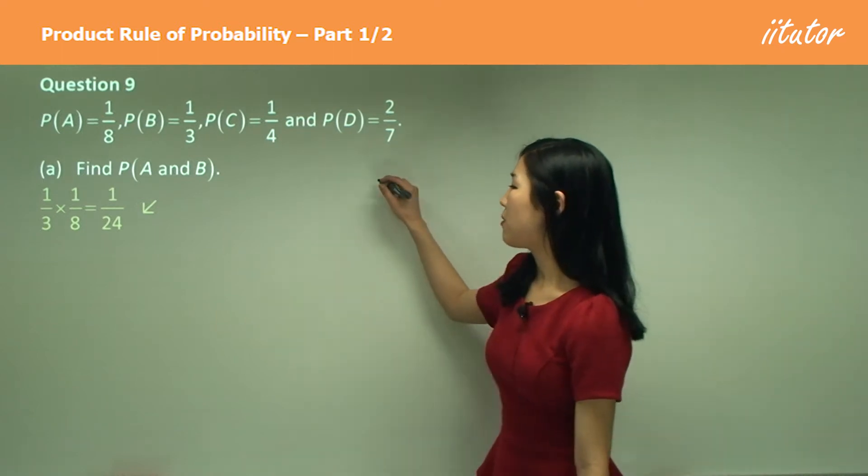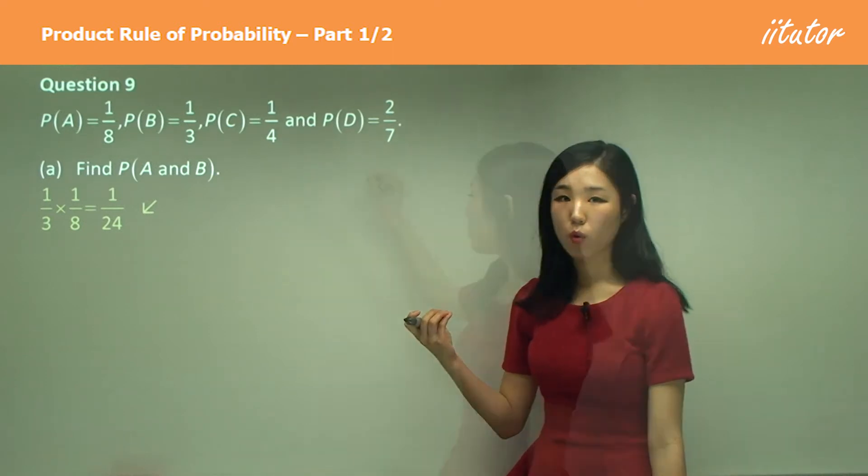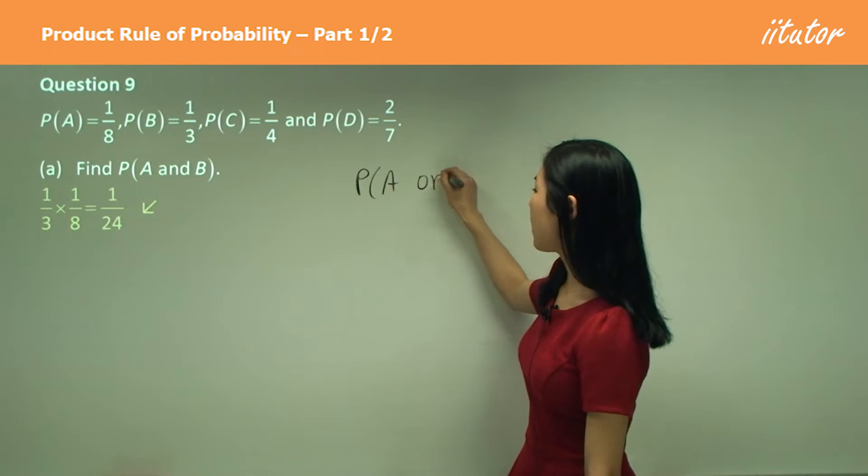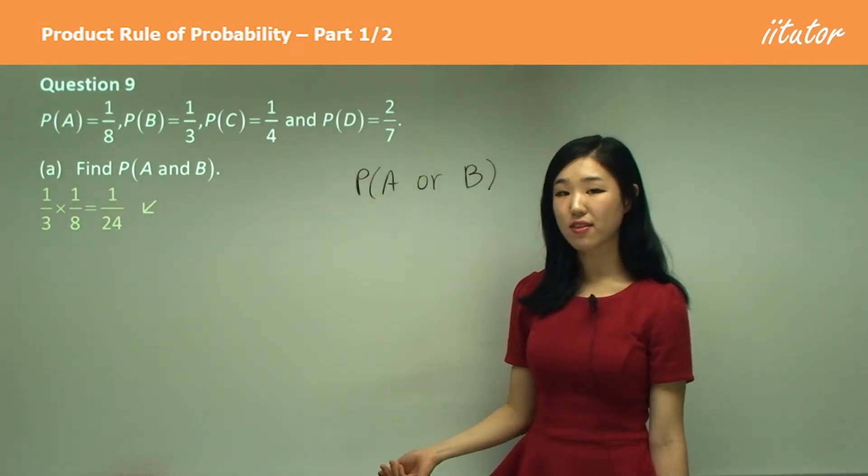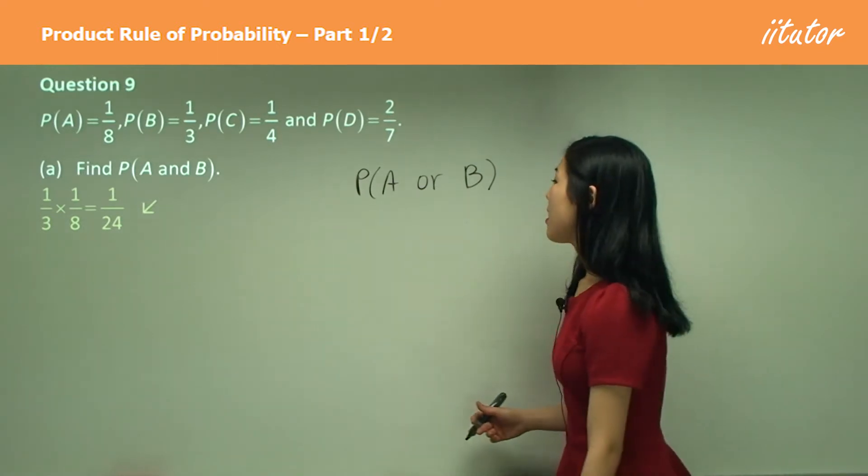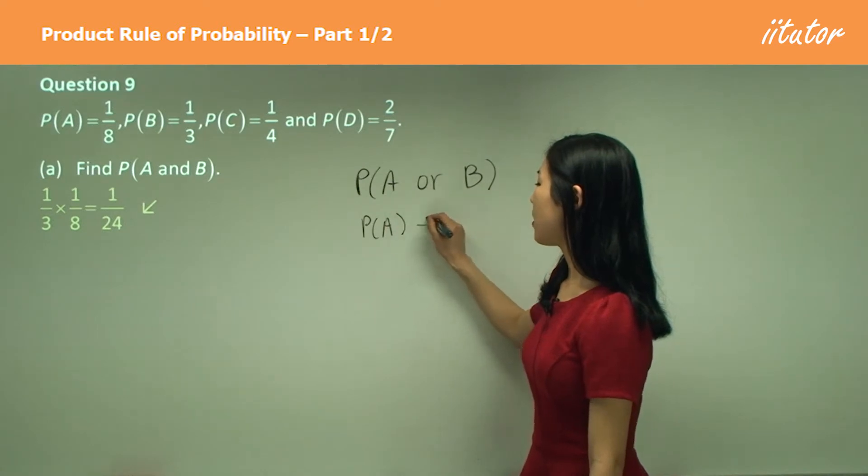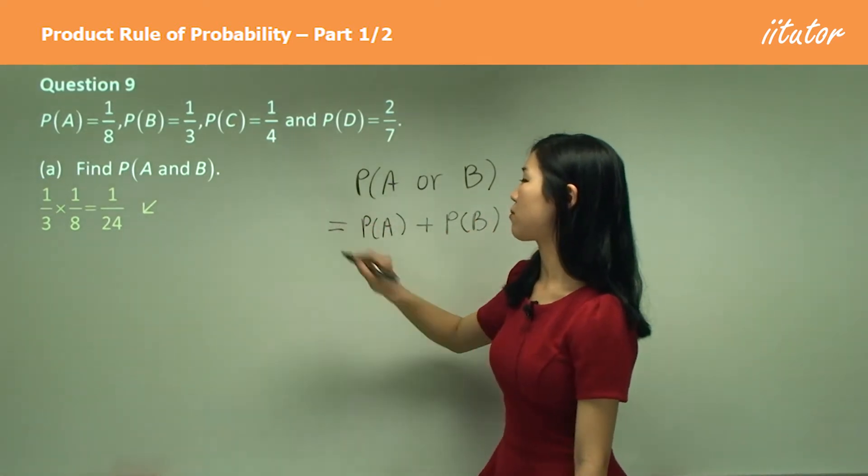Now remember in the previous one, the addition rule, that's when we have or. When we have probability of say A or B, given that they're independent events, they're not dependent of each other, then we can say that it's probability of A plus the probability of B. This is what we've learned just previously.